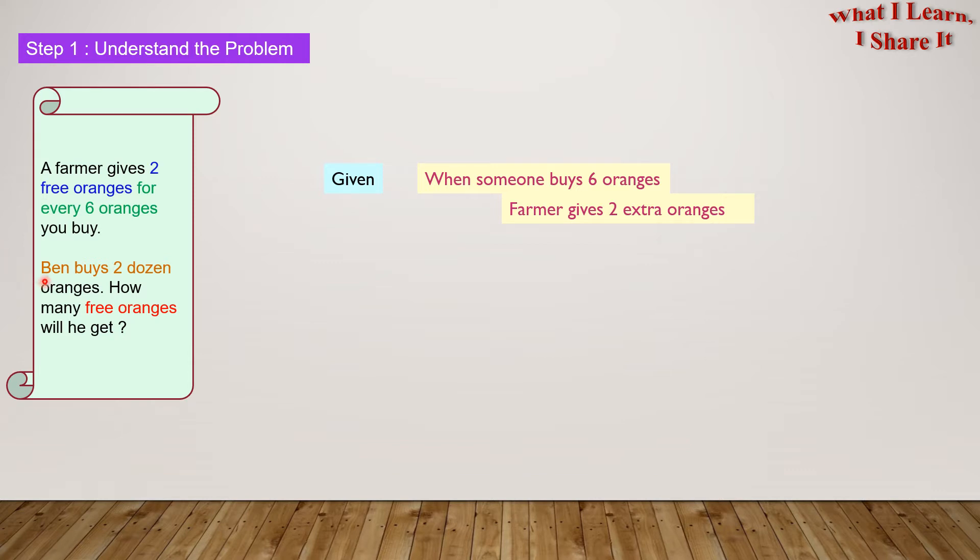And we know that Ben buys 2 dozen oranges. So here it is, Ben buys 2 dozen oranges. What is there to find? We have to find, How many free oranges will Ben get? So in our own words we can write, Free oranges that Ben will get.